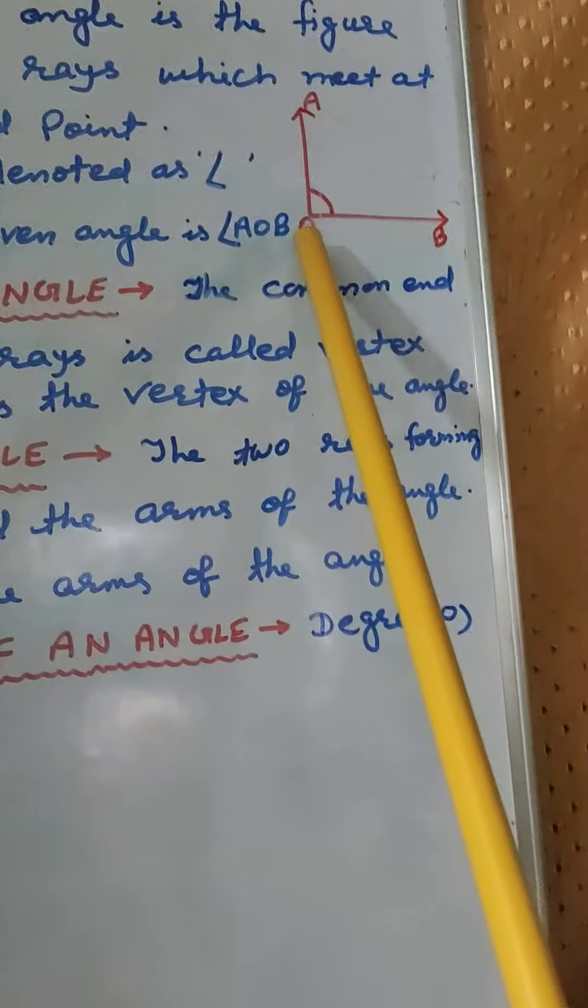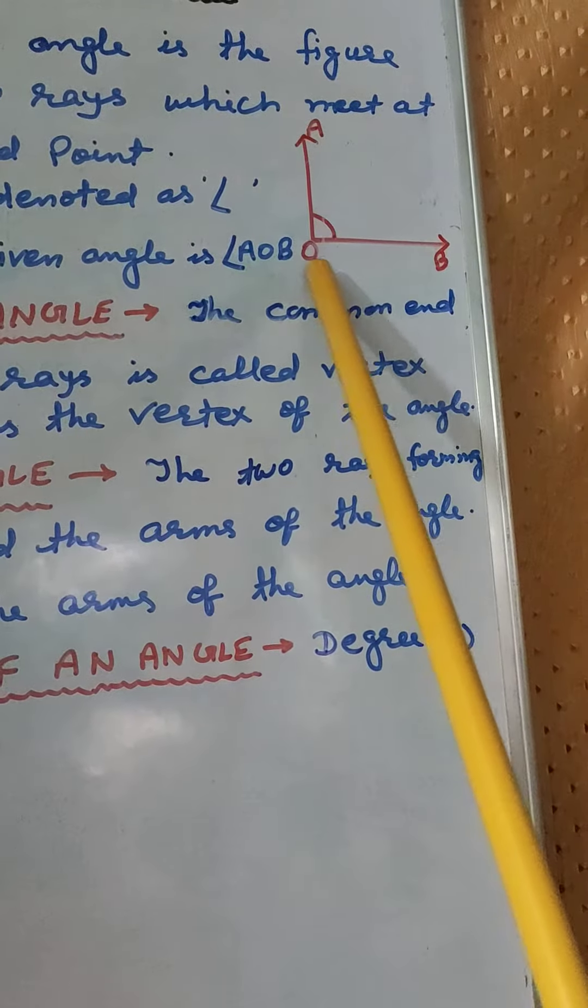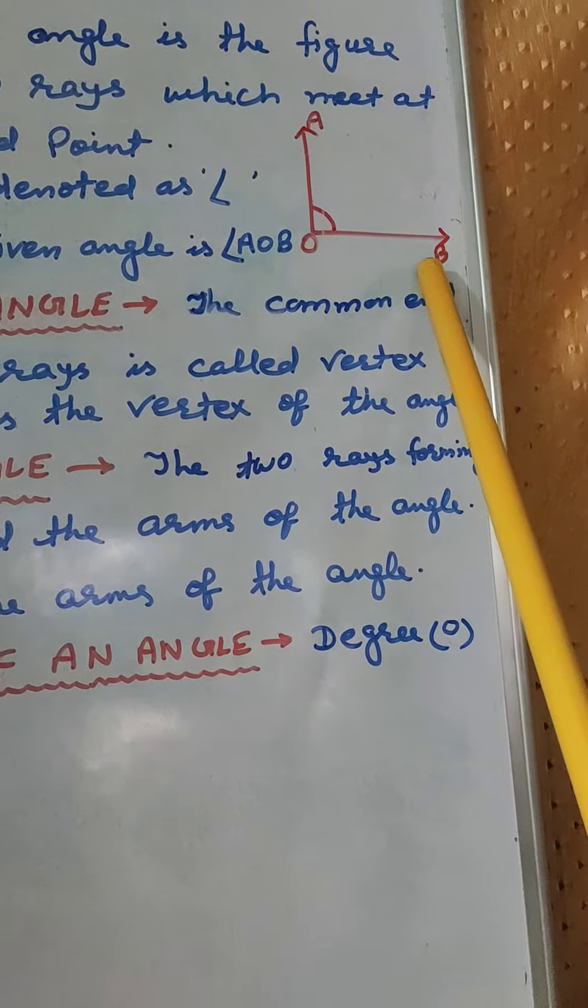Look here children. This is the vertex of the angle that is O and this is OA and OB are the arms of the angle.